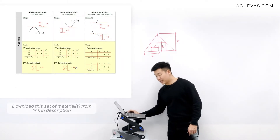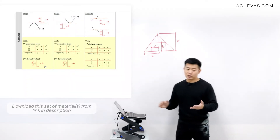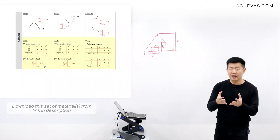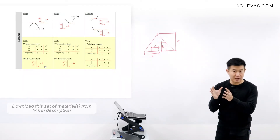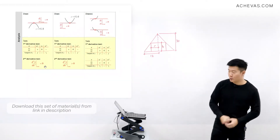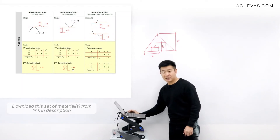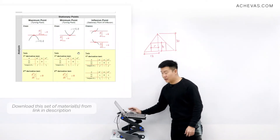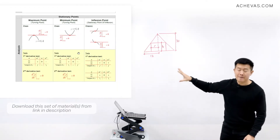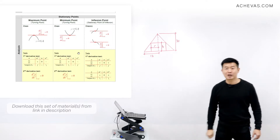For the second derivative test, we find d²y/dx² and evaluate it at x = a, where the stationary point occurs. If d²y/dx² is less than zero, it is a maximum point. If it is greater than zero, it is a minimum point. If you are not familiar with this, please revisit the previous lesson. If you are ready, let's look at a question together.